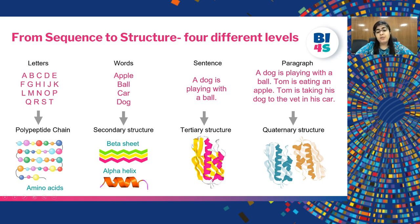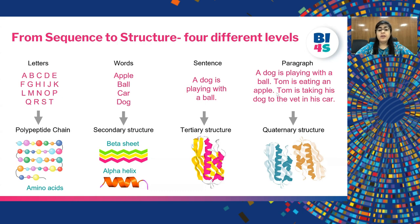How these sequences start folding locally — at small stretches — constitutes level 2, or secondary structure. The complete folding of a protein in 3D space is called the tertiary structure, which is important for performing the function of a protein and for its interactions with other proteins. Some proteins are made up of more than one polypeptide chain; each chain is known as a subunit. The folding of these subunits with respect to each other forms the fourth level, known as quaternary structure.